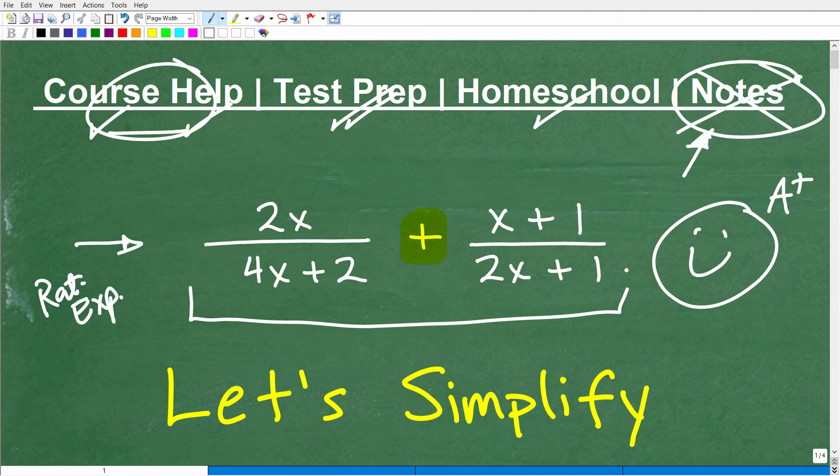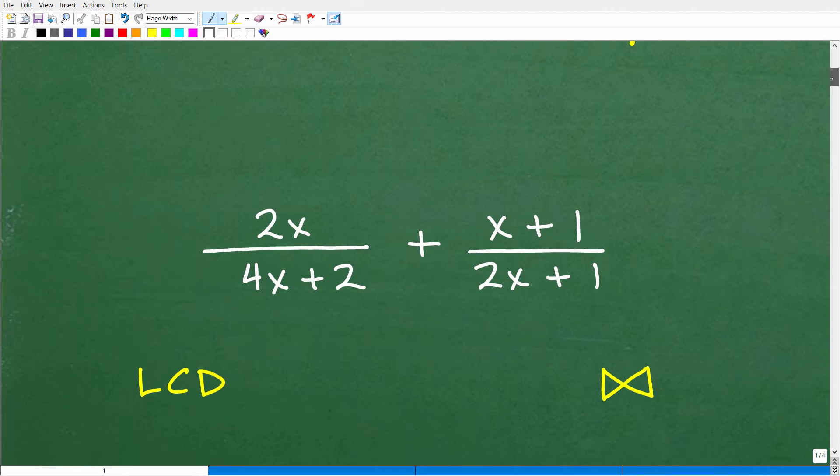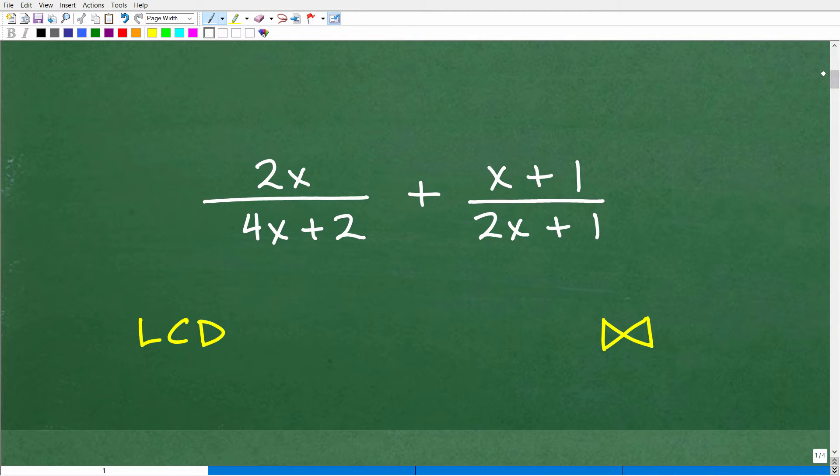Alright, so here it is. We want to add these rational expressions. Any time you're adding fractions, I'm calling these rational expressions, just like any fractions, like let's say 1 over 3 plus halves. If the denominators are the same, I could just go ahead and straight away add the fractions.